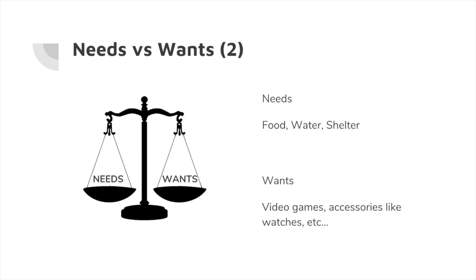Let's look at some examples. Three of the most basic needs, which everyone considers in their day-to-day life, would be food, water, and shelter. Some wants — the examples given here are video games and watches. The wants vary from person to person, but typically the needs stay the same. In order to succeed in personal finance, you have to find the correct balance between needs and wants.